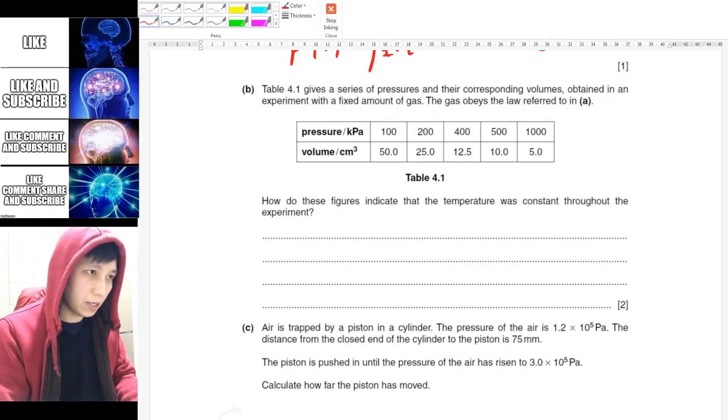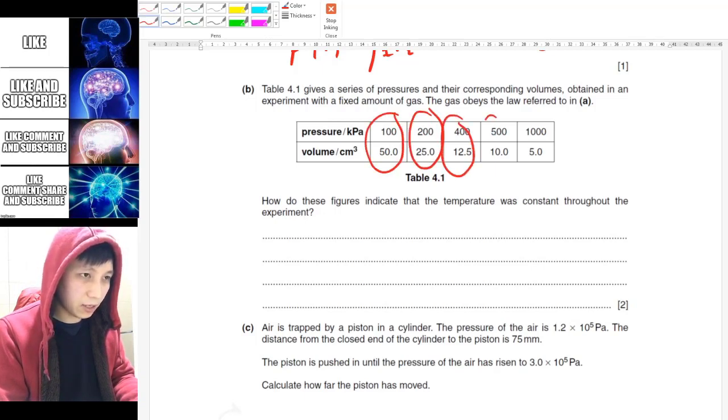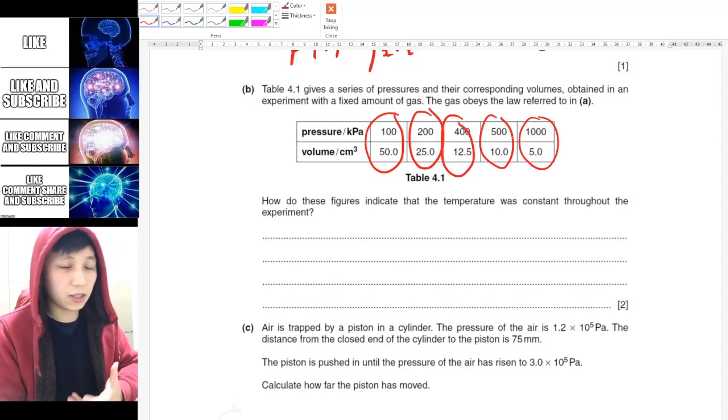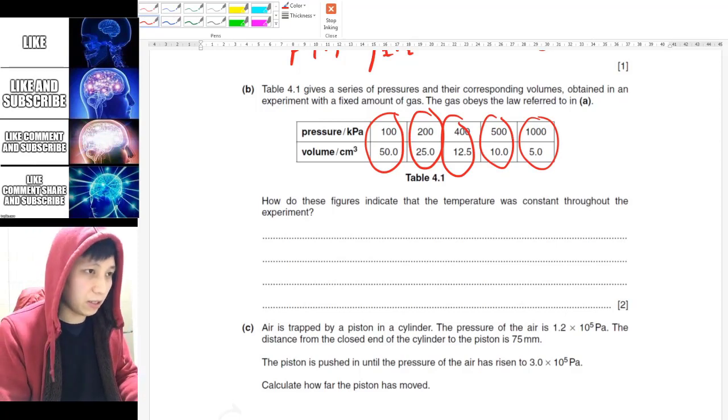So of course the first thing that you should see is when you multiply each of these sets of data, whether or not they will give you the fixed number, just like the previous simulation activity.